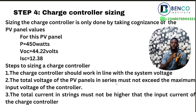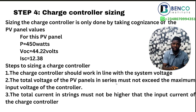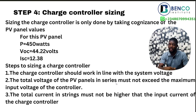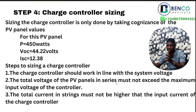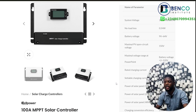These are the steps we take while sizing the charge controller. First, the charge controller should work in line with the system voltage — our system voltage is 24 volts. Second, the total voltage of the PV panels in series must not exceed the maximum input voltage of the controller. Third, the total current across strings must stay within limits. A string is batteries or panels connected in series — for our eight batteries we have two strings of four in series. The same concept applies to panel strings.